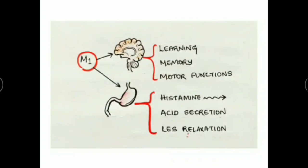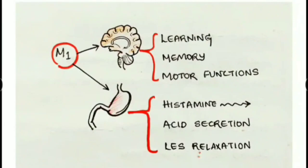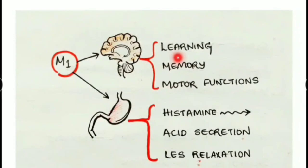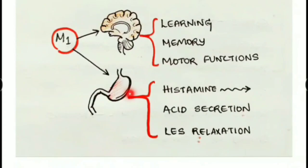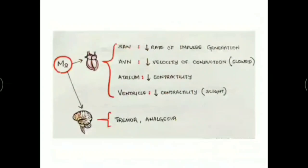Regarding the muscarinic receptors, M1 receptors are located at the brain (CNS) and also at the GIT. In the brain, they are concerned with learning, memory, and motor functions. In the GIT, stimulating M1 receptors causes histamine release and gastric acid secretion, and during stimulation there is lower esophageal sphincter relaxation.